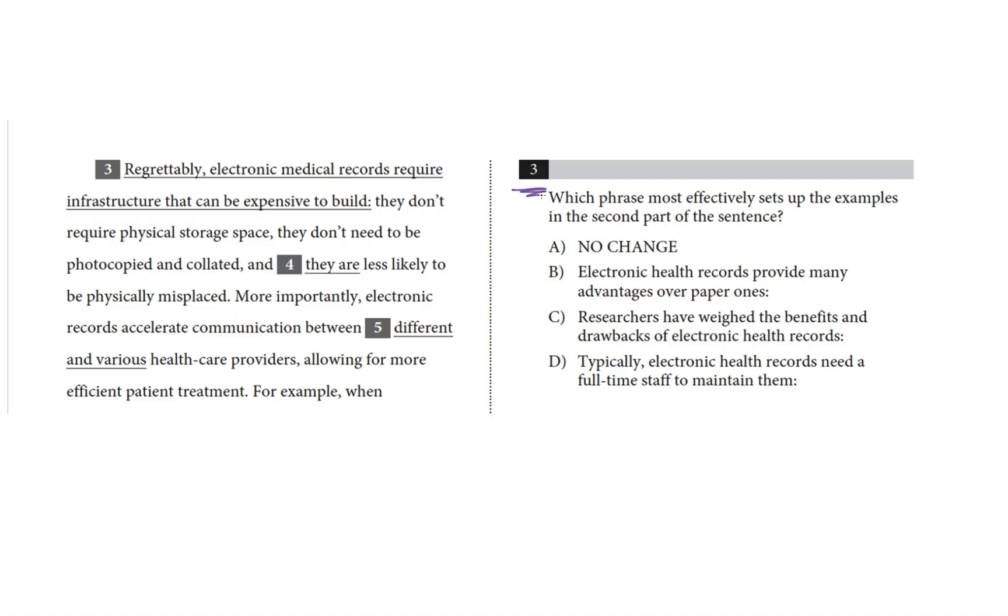Alright, this is question three, and we want to know about the examples in the second half of the sentence. Right, this sentence here. So, what are those examples? Okay, they don't require physical storage space, they don't need to be photocopied and collated, and they are less likely to be physically misplaced. What's the 'they'? Looks like electronic medical records.